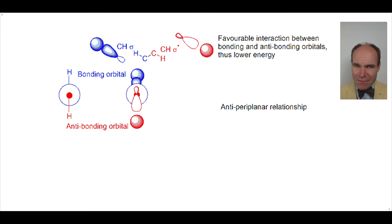But we get beneficial stabilizing effects between the electrons in the bonding orbital and the anti-bonding orbital. This results in a lower energy, making the staggered conformation much more likely to form.